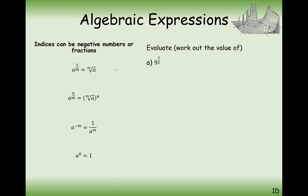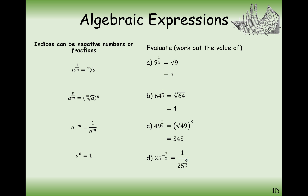Now let's apply these rules to numerical values. 9 to the power of 1/2 is just the square root of 9, which is 3. 64 to the power of 1/3 is the cube root of 64, which is 4. For 49 to the power of 3/2, we square root first to get 7, then cube that to get 343. For 25 to the power of minus 3/2, the negative gives us 1 over 25 to the power of 3/2, then we square root 25 to get 5, and 5 cubed is 125, so the answer is 1 over 125.